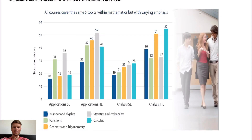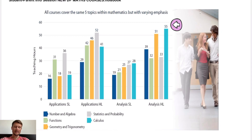Looking at the bar chart model, it gives you an idea of how many hours should be spent on each topic and which topic is covered the most. For the AI SL, 52 hours of that course over just under two years is statistics and probability. For the advanced Math AA HL, statistics is only 33 hours compared to the 52; however, in that course, calculus is 55 hours — a huge portion — as well as geometry and trigonometry. Looking back at the AI courses, the number of hours in algebra is a lot lower.